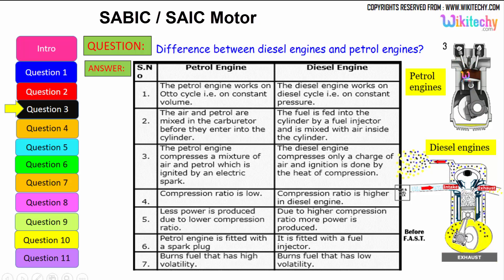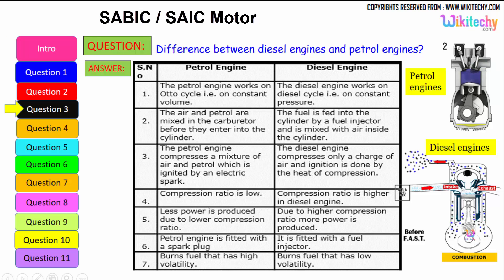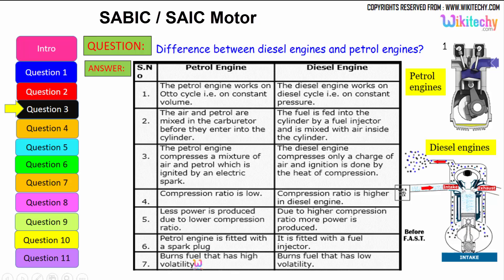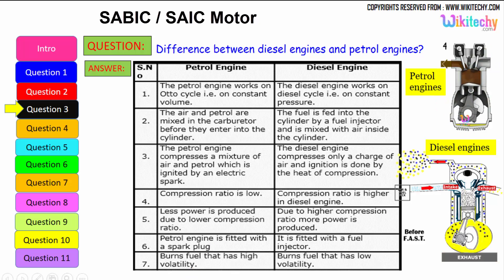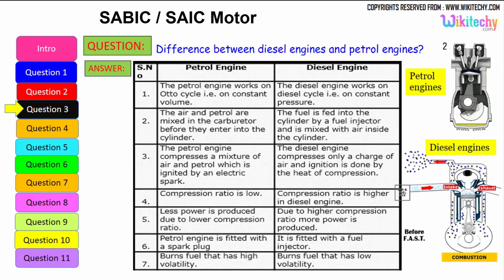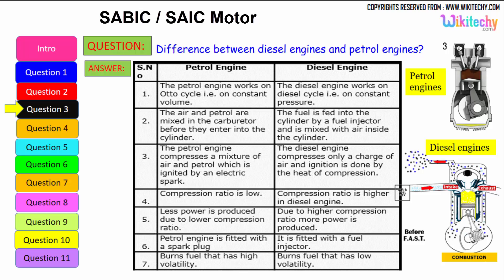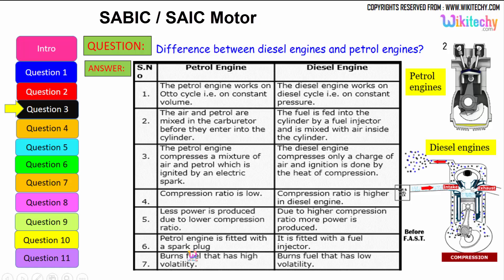The petrol engine is fitted with a spark plug, whereas the diesel engine is fitted with a fuel injector. The petrol engine burns fuel with high volatility — petrol is highly volatile — whereas the diesel engine can burn low volatility liquid, since diesel is a low volatile liquid. These are some of the differences between the petrol engine and the diesel engine.